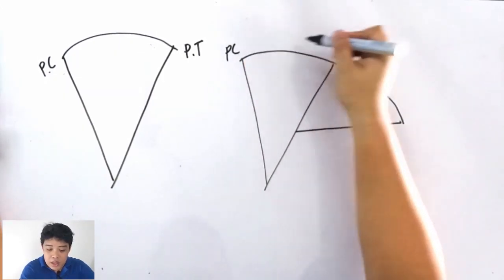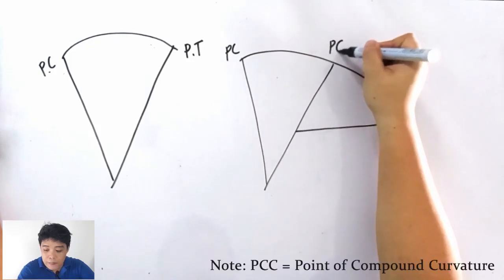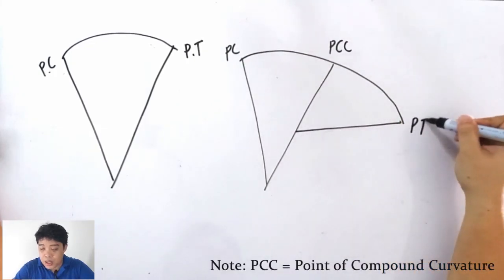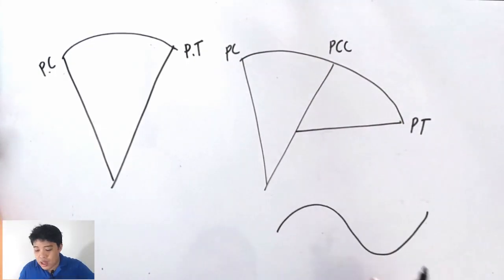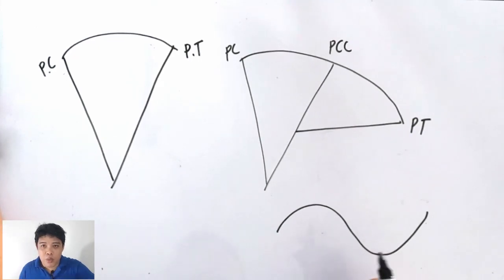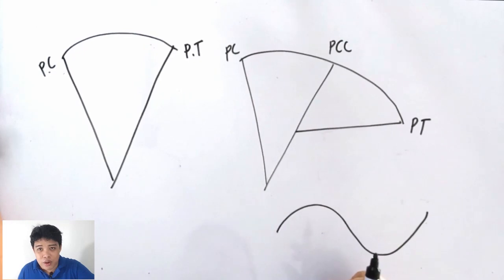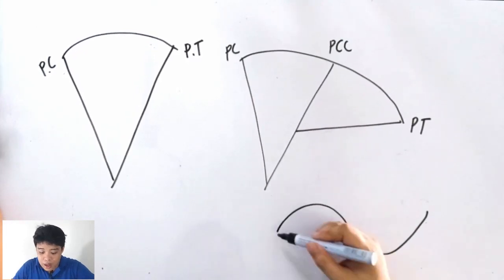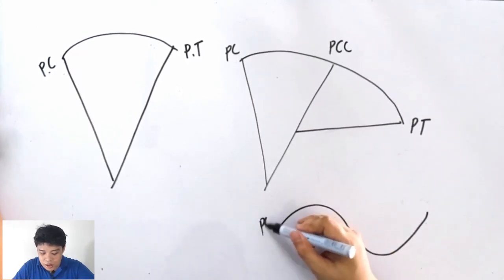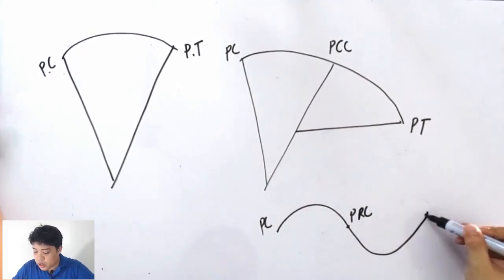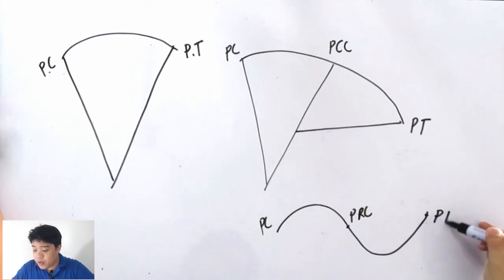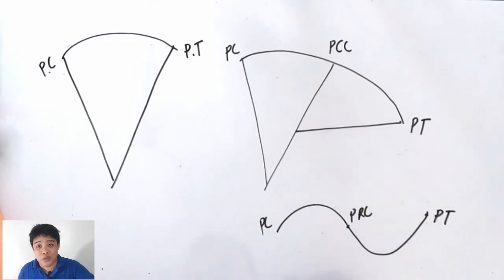For a compound curve, this is PC, this is PCC, and this is PT. For a reverse curve, it is a curve made up of simple curves with different directions of curvature. So this is PC, this is the point of reverse curvature, and this is the point of tangency.